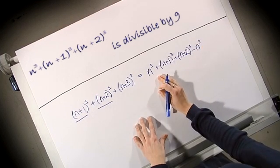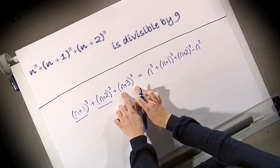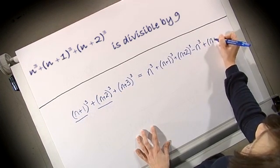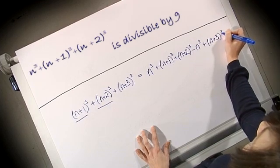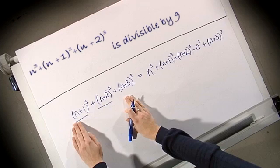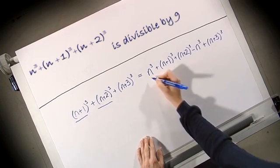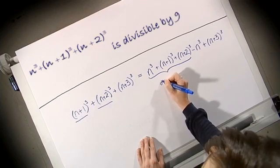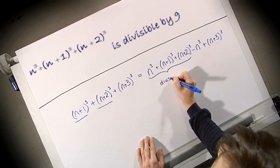I also need to ensure that I include the third term here, the (n+3) cubed. So let's add that on. Now notice that the right hand side still equals the left hand side. Although now, the first three terms we know are divisible by 9. It's the case for n. So these are divisible by 9.